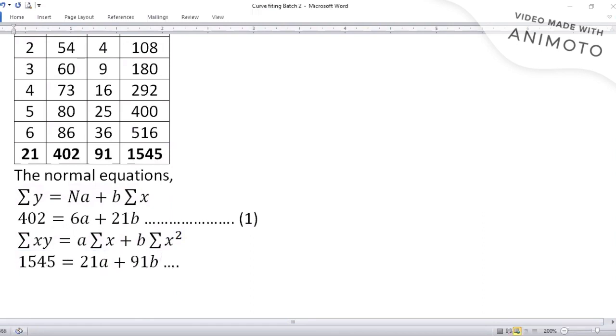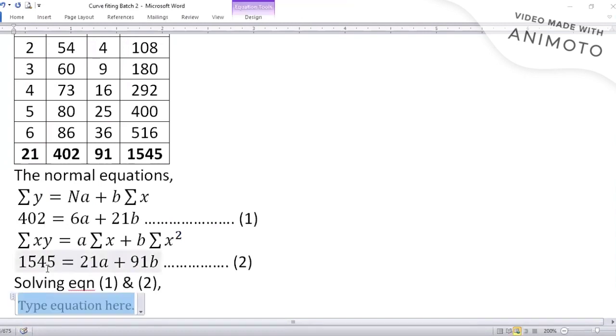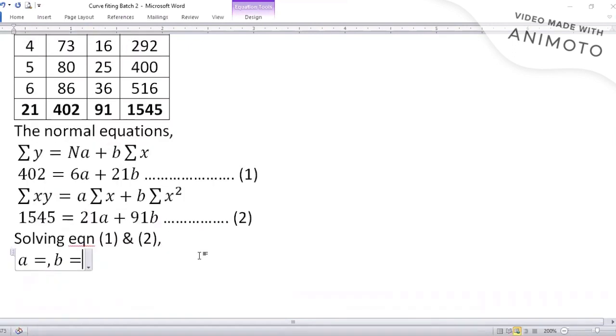And you have to solve in the calculator equation one and two. In the calculator, equation mode is there. The very first option will let you find the value of a and b. Equation mode, the option number one. In equation mode, you have to enter the coefficients from here.